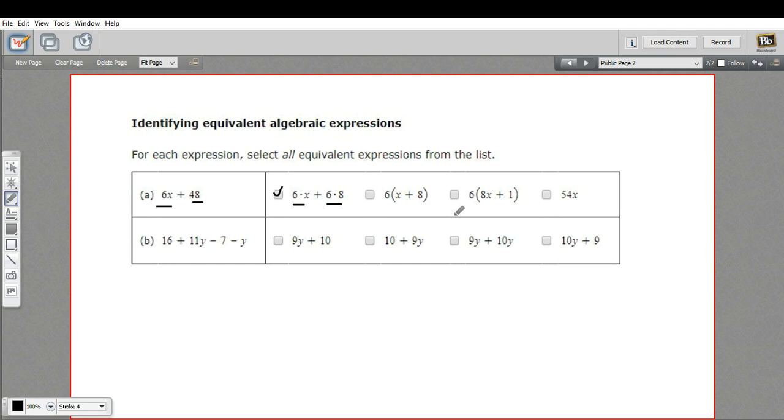This next one, we have parentheses. So we could distribute this 6, that is multiply it by each of these two terms. If I did that, 6 times x would be 6x, and 6 times 8 would be 48. And that is exactly what we have to start with. So that one is equivalent.